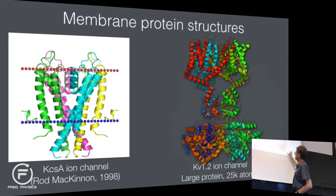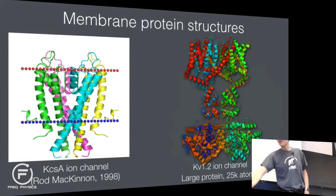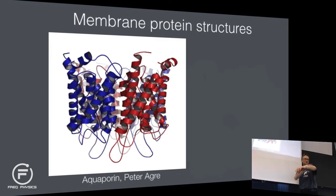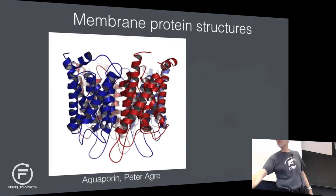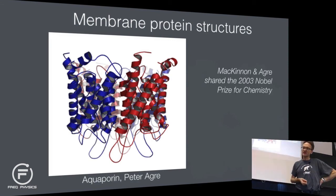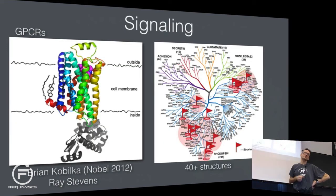These are structures similar to proteins that exist in humans, where you actually have ion channels controlled by voltage. Aquaporins are the water channels that determine how much water goes in and out of your cells — Peter Agre shared the Nobel Prize with Rod MacKinnon in 2003. GPCRs — the ones I talk about — Brian Kobilka at Stanford got the Nobel Prize for those structures in 2012.